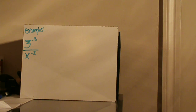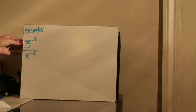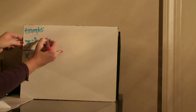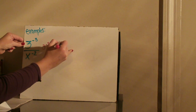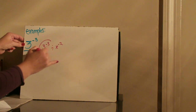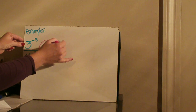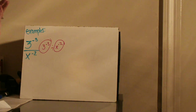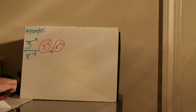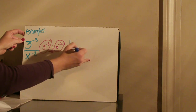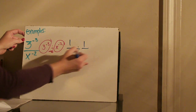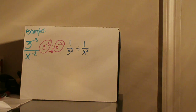The next example is 3 to the negative 3 over x to the negative 2. In both the numerator and denominator I need to apply my rule. I'll write them horizontally so I can easily see that I have 3 to the negative 3 and x to the negative 2 that each need the rule applied, and again it's division. So now I have 1 over 3 cubed divided by 1 over x squared.